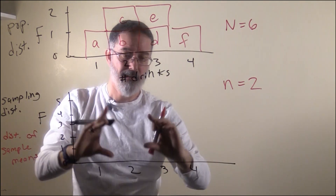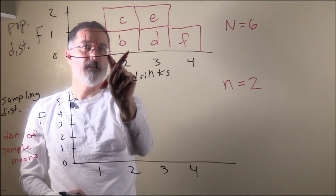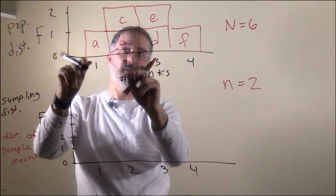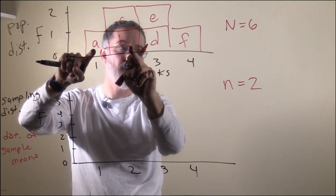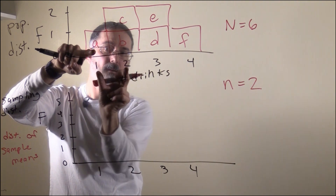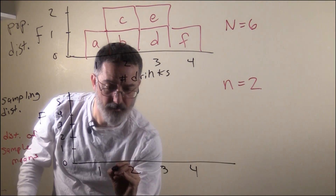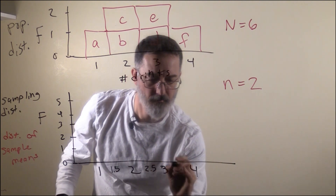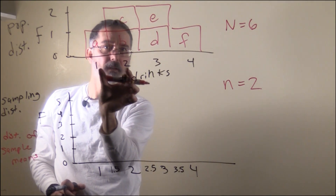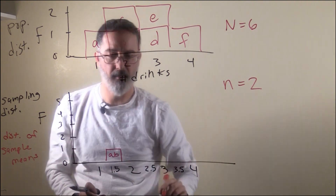This is the number of drinks people have had, and this is the average number of drinks that groups of two have had. We can start with A and find every sample of two with A and everybody else. First, A and B: A has a 1, B has a 2, so the average is 1.5. I need to add a few more spots down here because the sample means are going to have these halves in them. So our first sample mean, A and B, was 1.5, and I will plot that above 1.5 here.